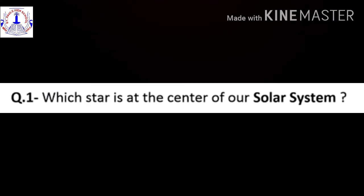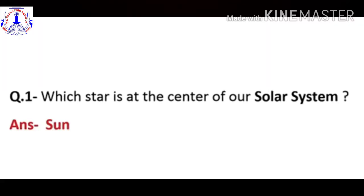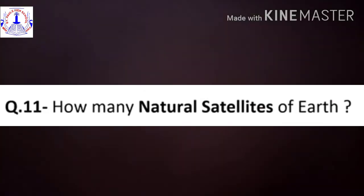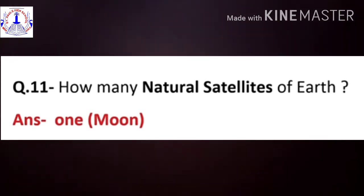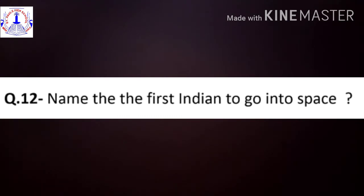Now let's answer a few more questions. Which star is at the center of our solar system? Right, the star at the center of our solar system is the Sun. How many natural satellites are there of Earth? Very good, our Earth has only one natural satellite, that is the Moon. Name the first Indian to go into space. Correct, Rakesh Sharma is the first Indian to go into space.